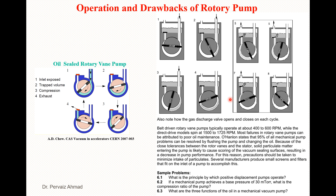Belt-driven rotary vane pumps typically operate at about 400 to 600 revolutions per minute, while direct-driven models spin at 1500 to 1725 revolutions per minute. Most failures in the rotary vane pump can be attributed to poor oil maintenance — this is one of the main drawbacks since the rotary pump uses oil.